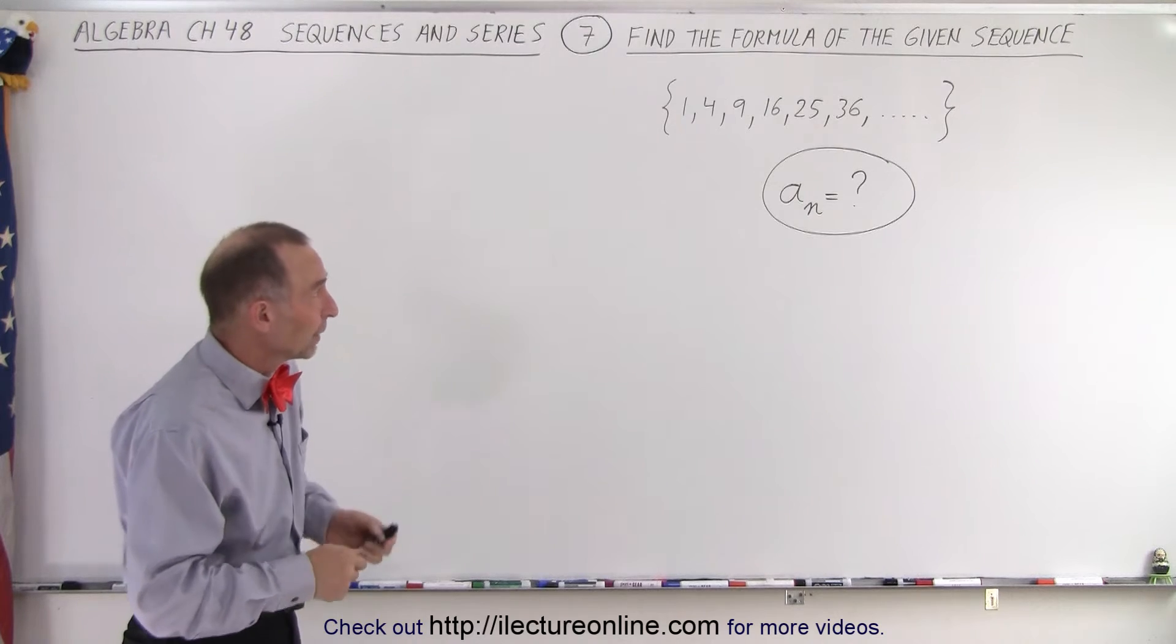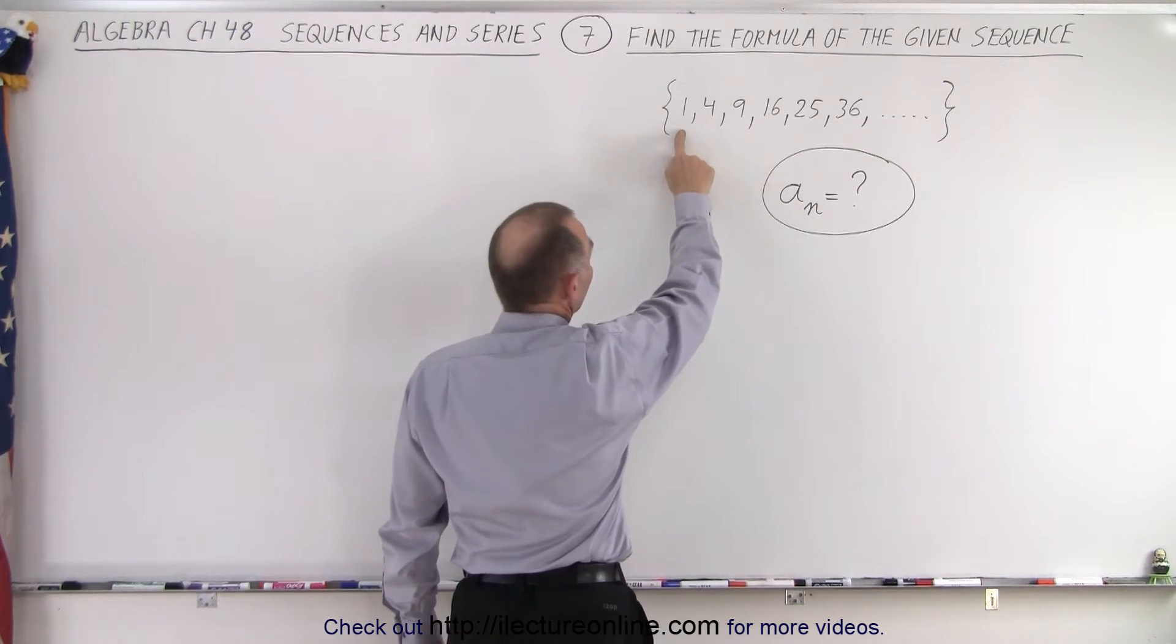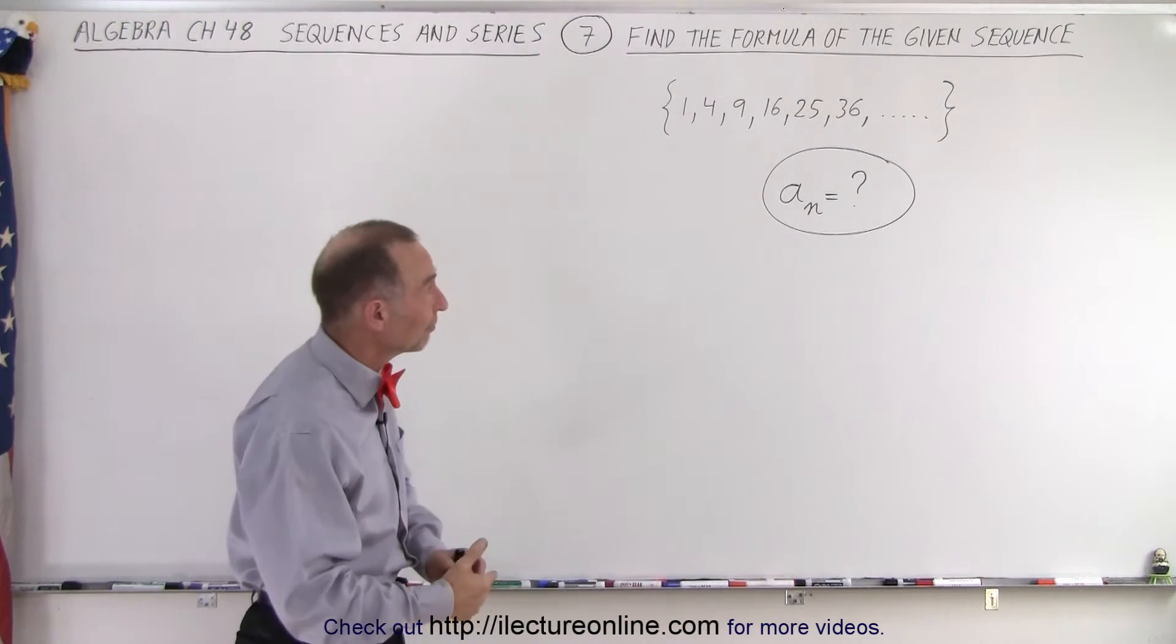Well, let's take a look. Here we're given a sequence. It's an infinite sequence and the first term is 1, the second term is 4, the third term is 9, then 16, 25, 36.